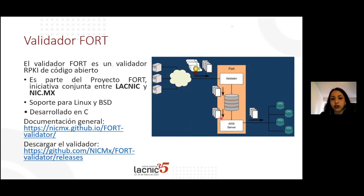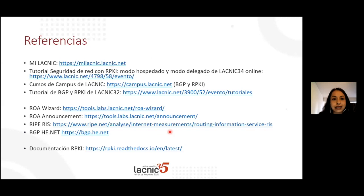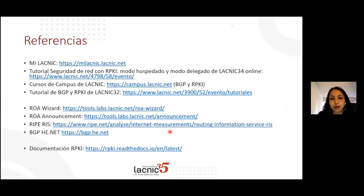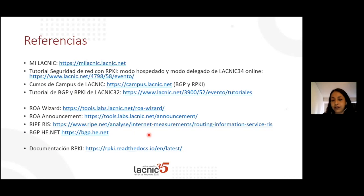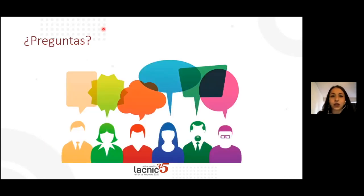The third validator is Routinator 3000 from NLNet Labs — very efficient in terms of server resources (RAM and CPU). A webinar at LACNOG explained how it works. The fourth is the Fort validator, a project managed by Mexico and LACNIC, which provides monitoring tools and is very lightweight — practically it can be mounted on a virtual machine. Documentation, installation instructions, and download information are available in the presentation. Fort validator connects to the five RIR repositories, encapsulates route information on the server, and provides it to routers via the RTR protocol.